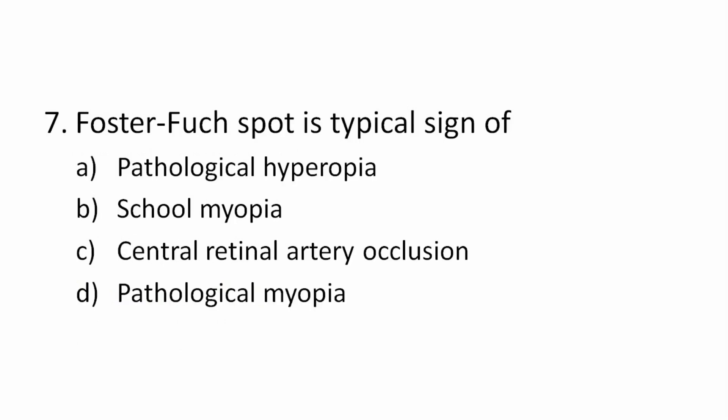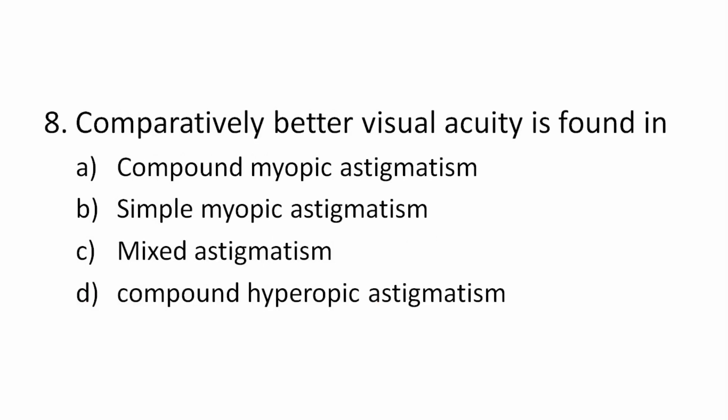Question 7: Foster Fuchs spot is a typical sign of which condition? Options: pathological myopia, school myopia, central retinal artery occlusion, hyperopia or myopia. The correct answer is pathological myopia. Foster Fuchs spot is a classic sign of pathological myopia.